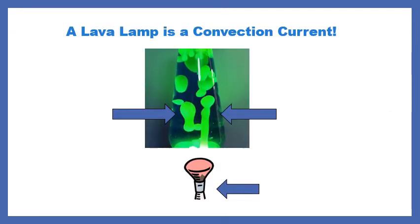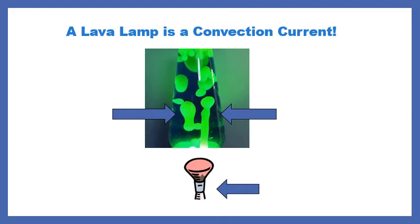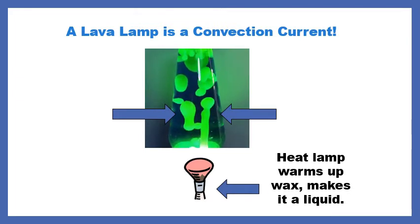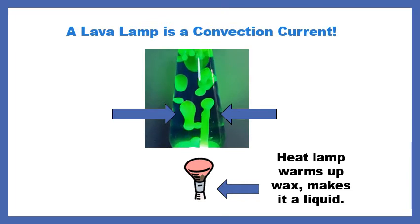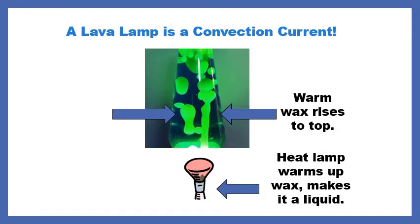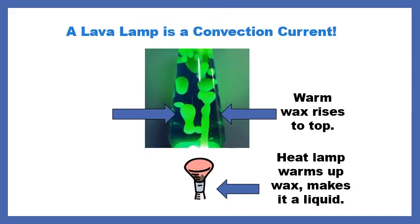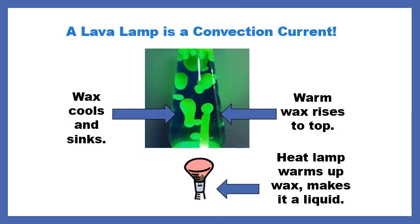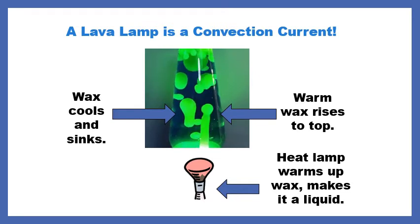My favorite example of convection is a lava lamp. I bought one when I was a little girl when Kmart was going out of business, and I used it to help me sleep. They get hot because at the bottom there's a heat lamp that warms up the wax — those green blobs are actually wax like candles. When you warm up the wax, it goes from solid to liquid, has less density because particles move faster, and it rises to the top. Then the wax cools, sinks, and the pattern repeats: warming, rising, cooling, sinking.